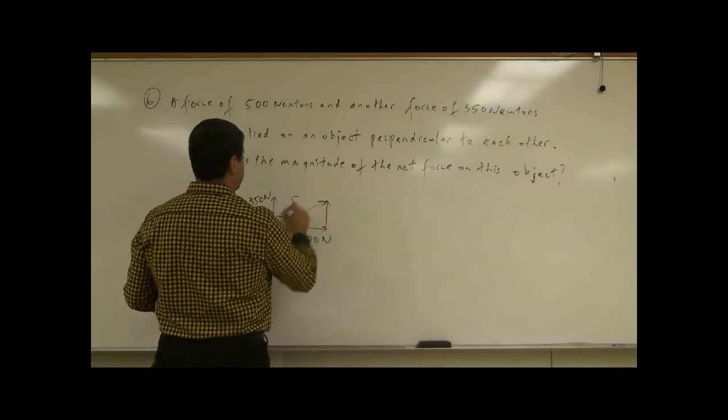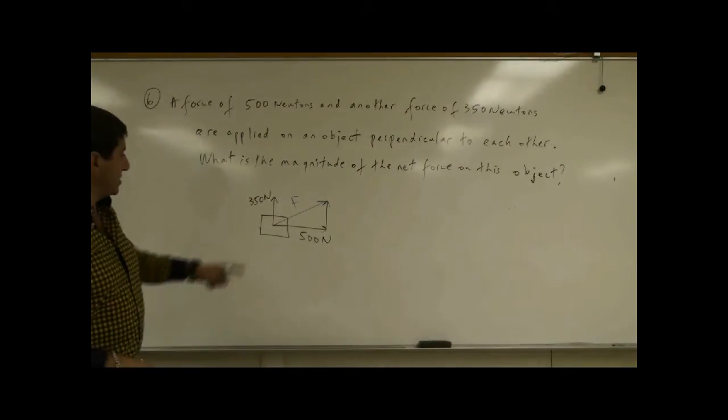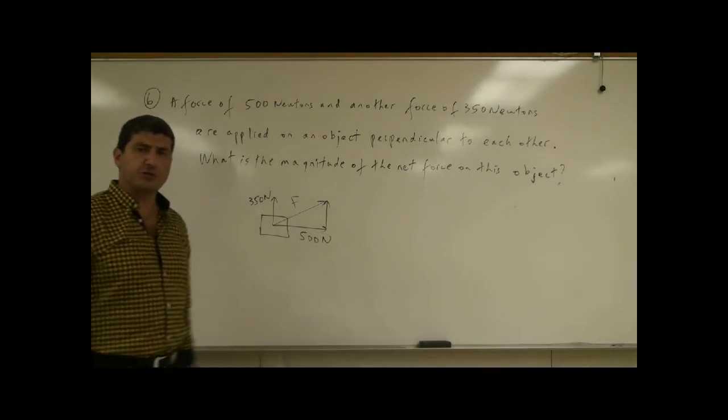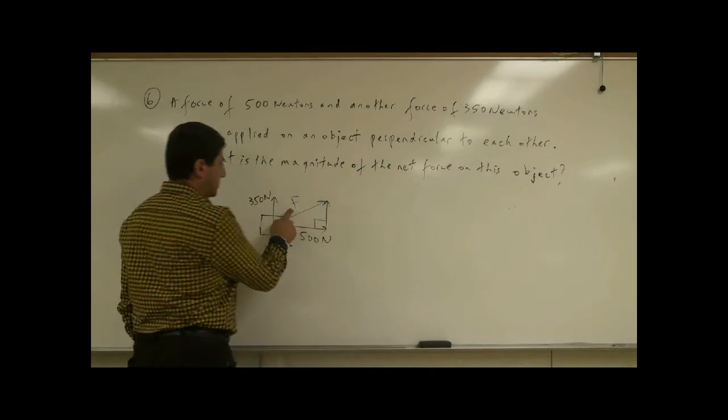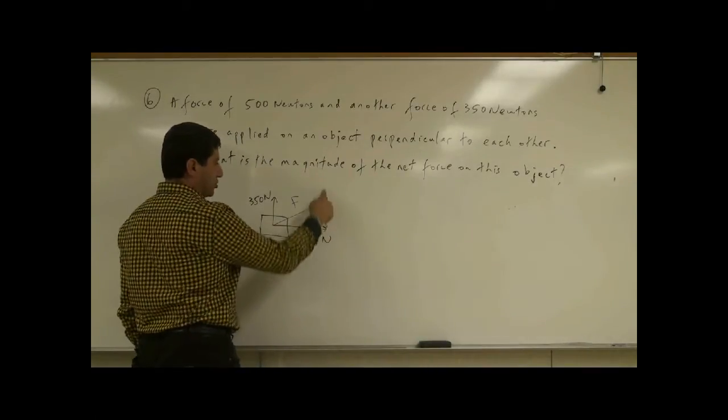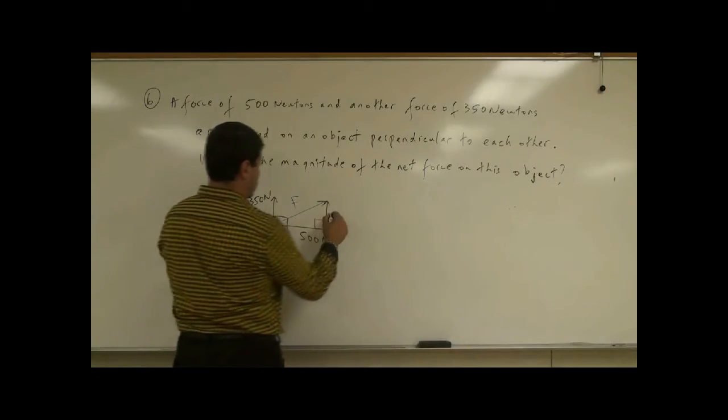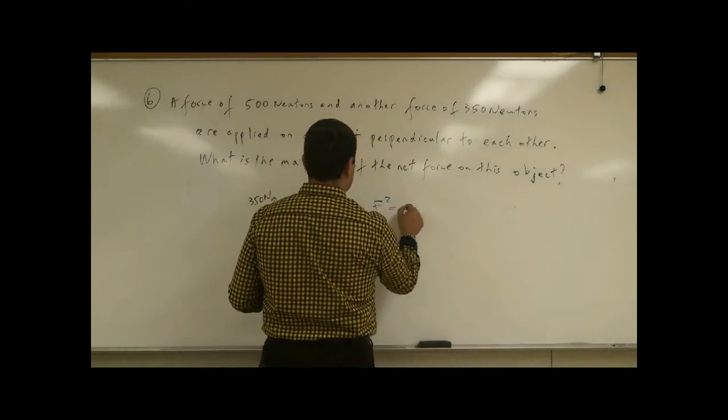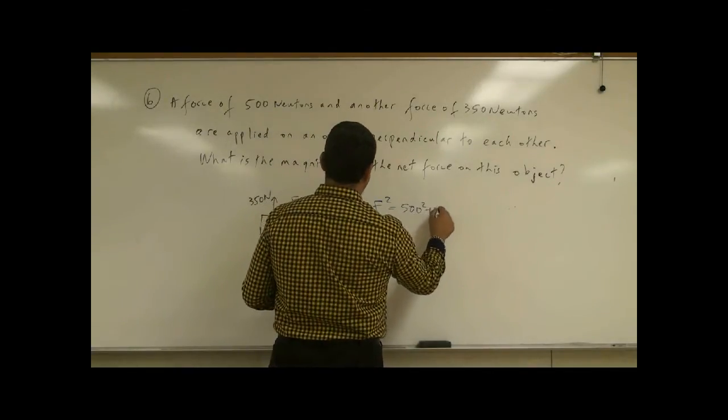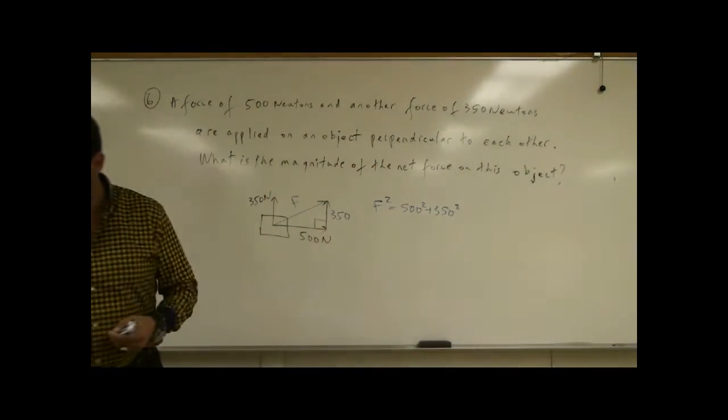So what is the magnitude of the net force on the object? Since these two vectors are perpendicular to each other, I can use the simple Pythagorean theorem. This quantity squared, this is the hypotenuse of this triangle, this squared is equal to this squared plus this squared. And this is also 350. So F squared is 500 squared plus 350 squared. So we can solve for that.